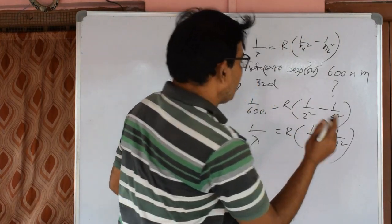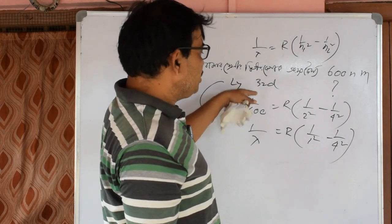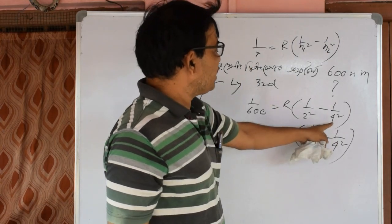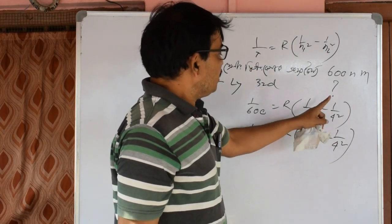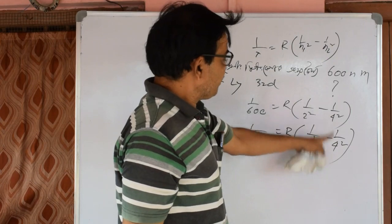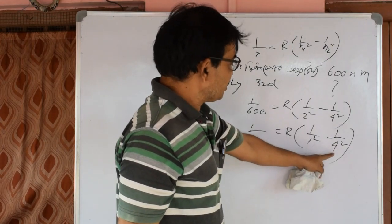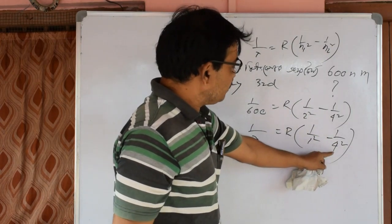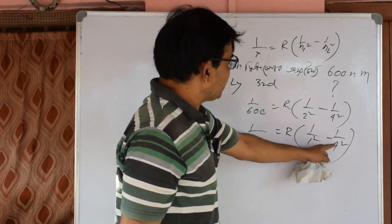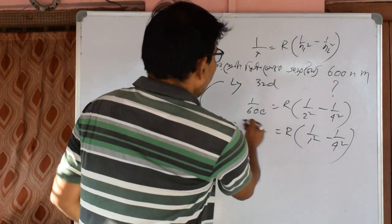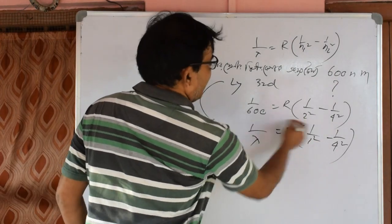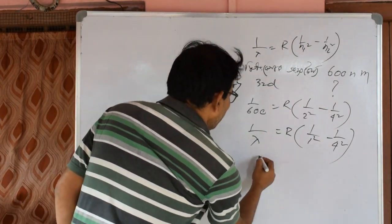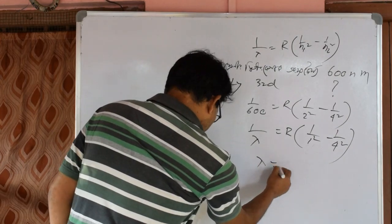If you look at that, the dimension is first 1, then 2, then 3, and then 4. If you look at this, you can see that lambda is 1.